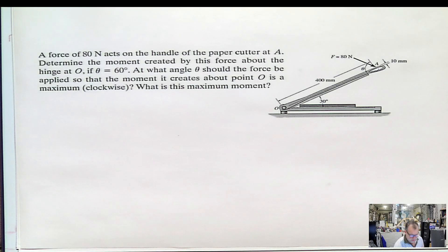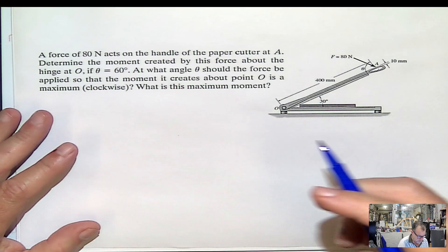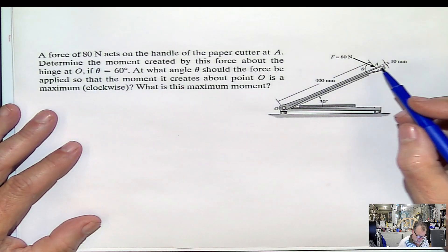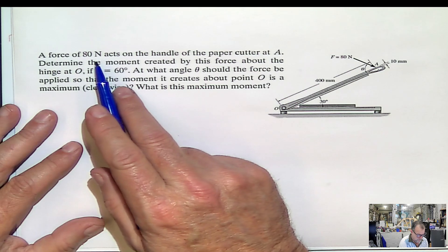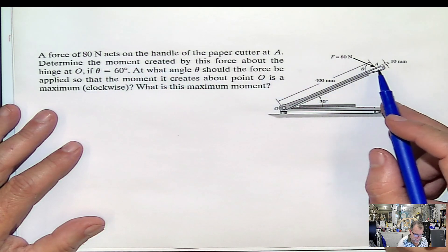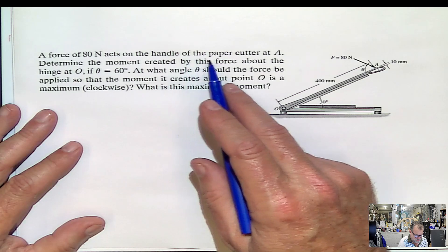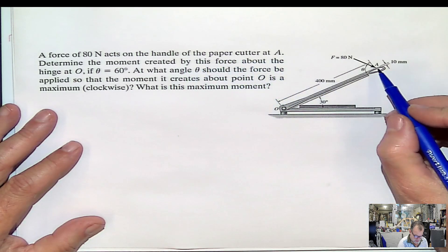Hey, guys. Let's check this problem out. It says force of 80 newtons. First of all, this is just a paper cutter machine. And it says that this force of 80 newtons acts on the handle of the paper cutter at A, right there.